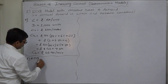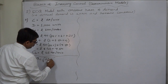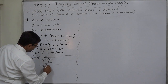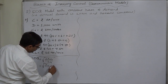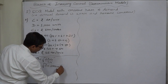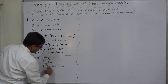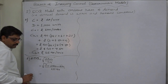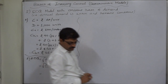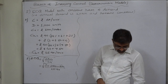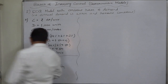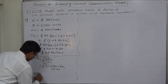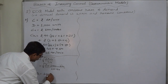EOQ equals the square root of 2DCO divided by CH, that is the square root of (2 × 1000 × 100) divided by 15.9. The calculation shows it comes to 112.15 units.